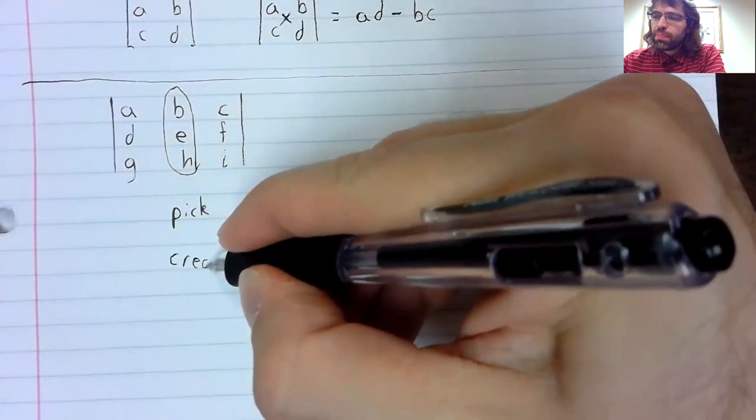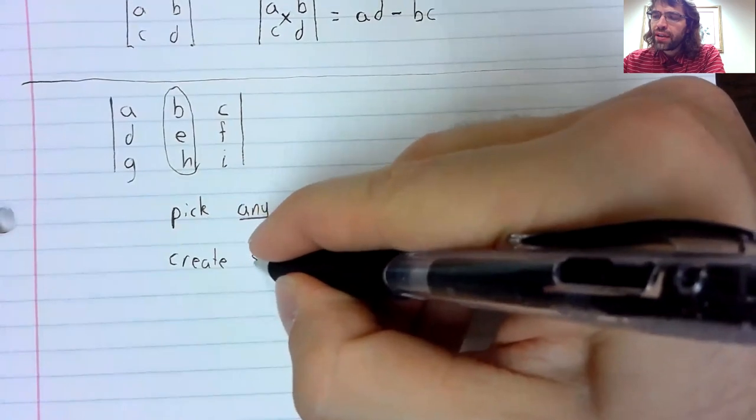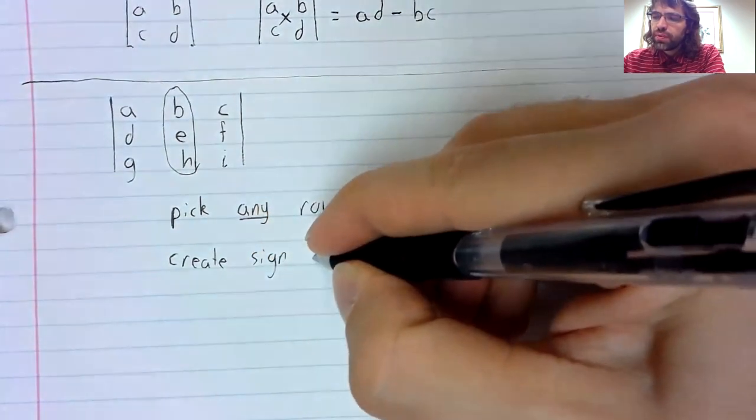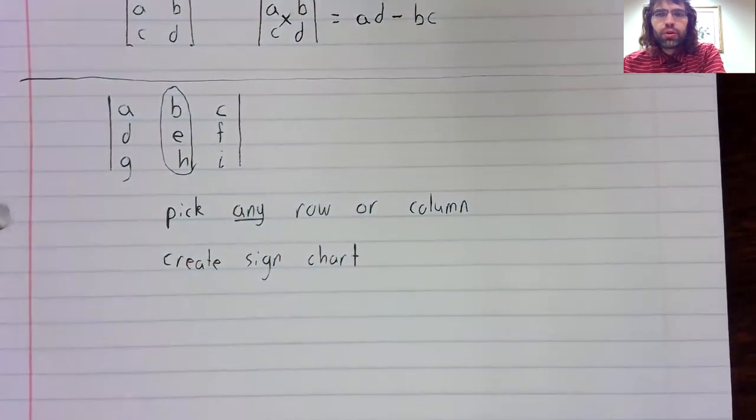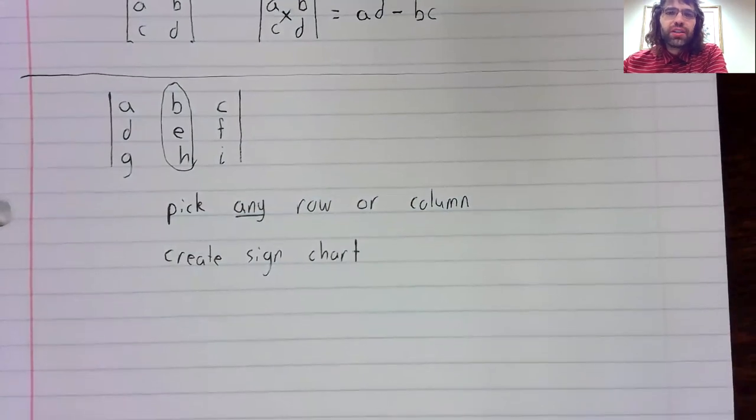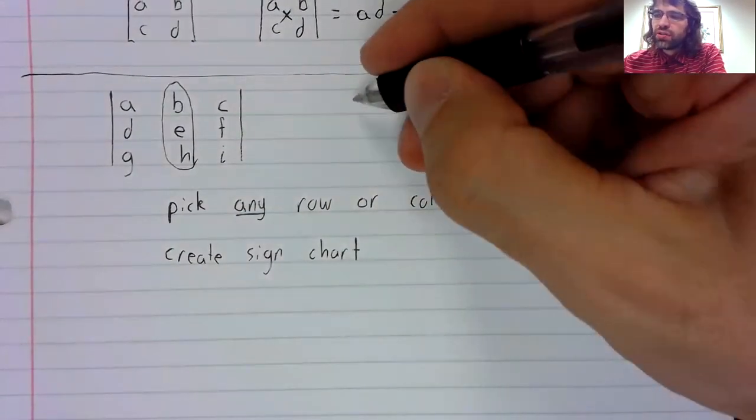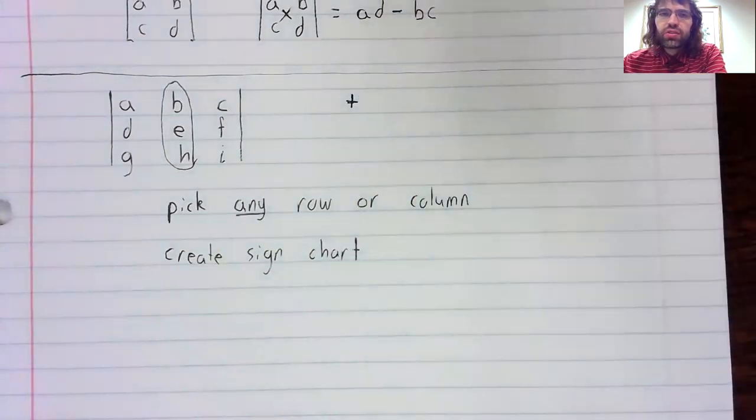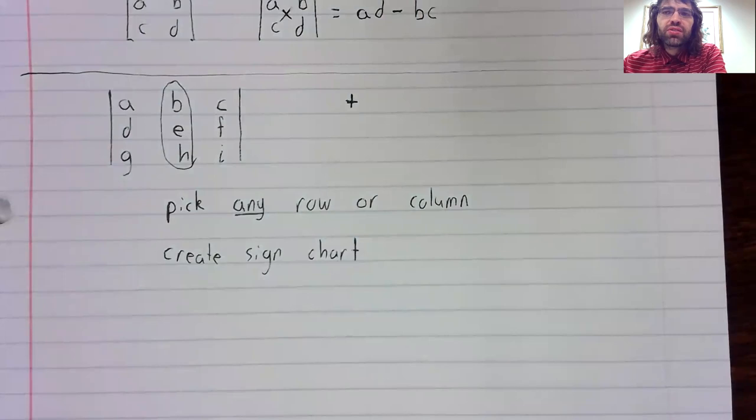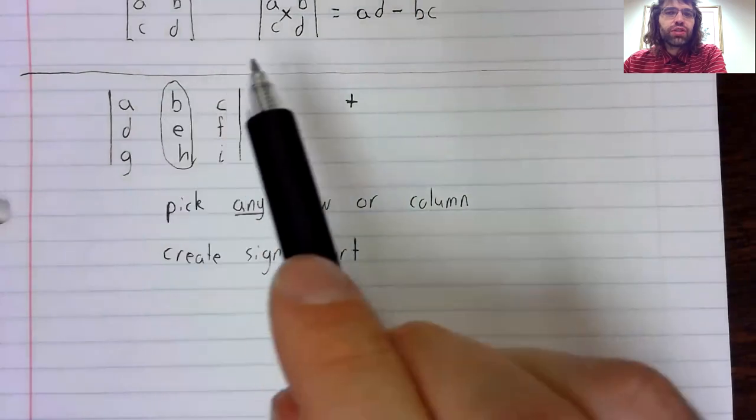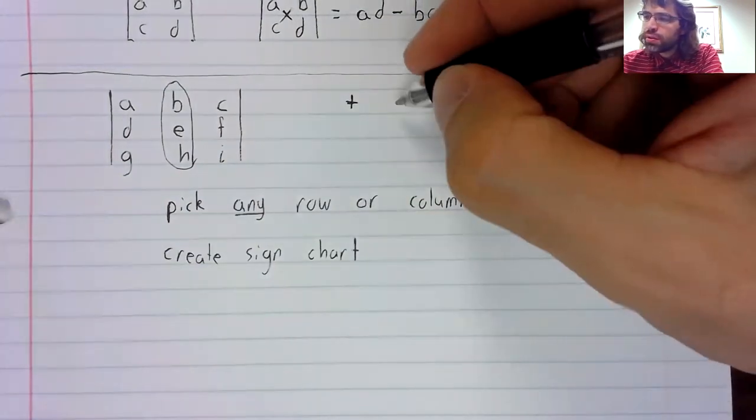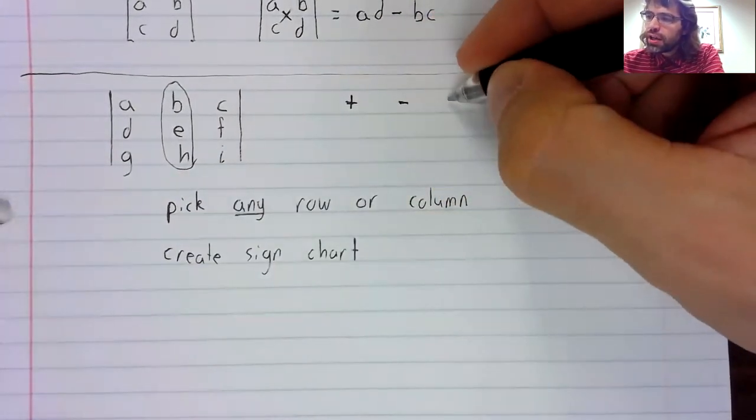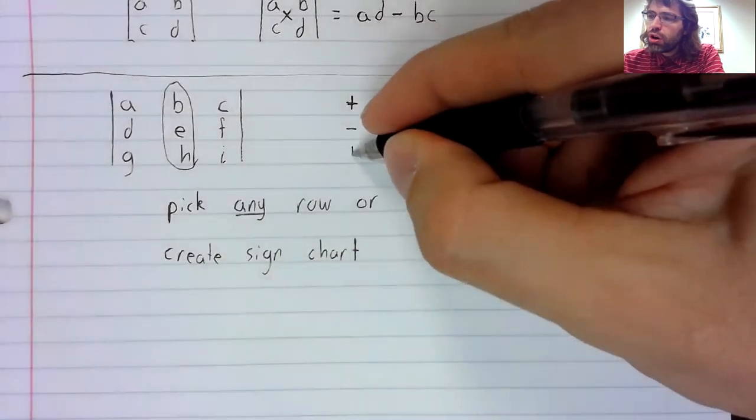This next step we could do in our heads, but since we're presenting the material for the first time, we're going to create a sign chart, and the sign chart is going to be an array of plus and minus signs. The same size as the matrix, starting with plus in the upper left corner.